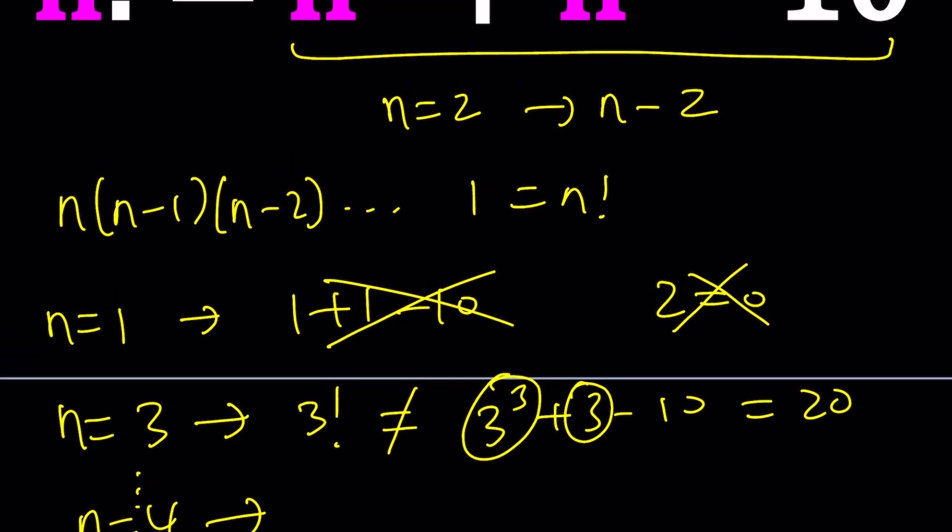If n is equal to 4, I get 24 on the left. And let's not put an equal sign. I get 4 cubed plus 4 minus 10, which is going to give me 64, 68, 78. Uh-oh, this is getting much, much bigger. Wait a minute. Come on, factorial. You're supposed to catch up. Okay, this is not the best approach, obviously.